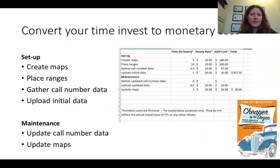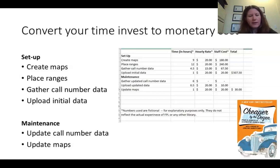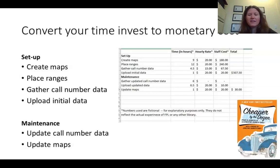Then convert that time investment to a monetary cost: take the amount of time, multiply by the hourly rate of the person doing it, and you get your staff cost. Combine that and look at what the initial setup will take, and then what ongoing maintenance will cost going forward. You figure out the total additional cost — not only the price of the product itself but also the staff time cost. That's really important to consider.